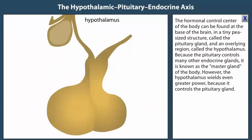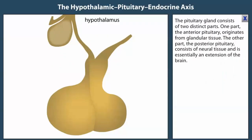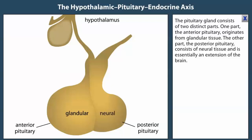The pituitary gland consists of two distinctly different parts. One part, the anterior pituitary, originates from glandular tissue. The other part, the posterior pituitary, consists of neural tissue and is essentially an extension of the brain.